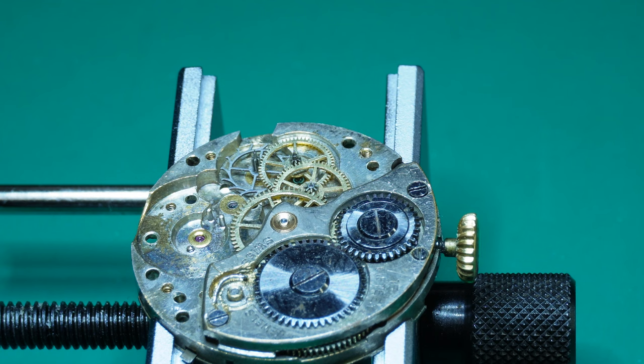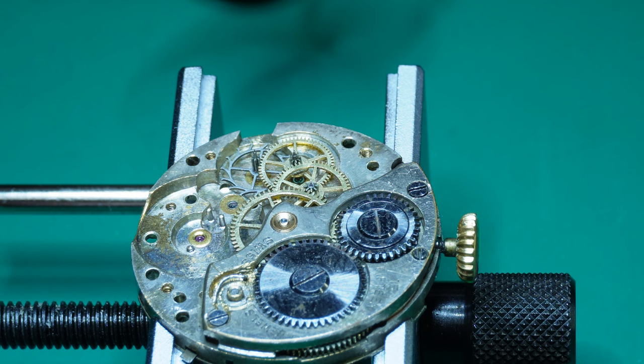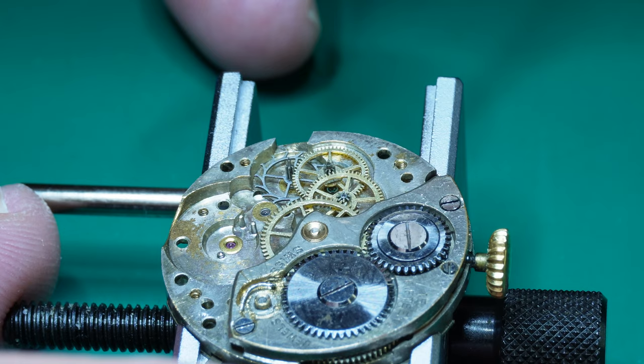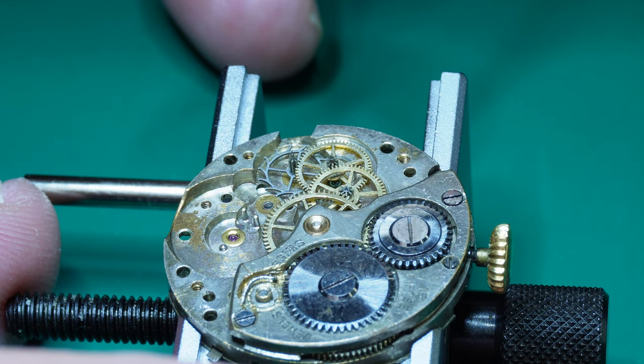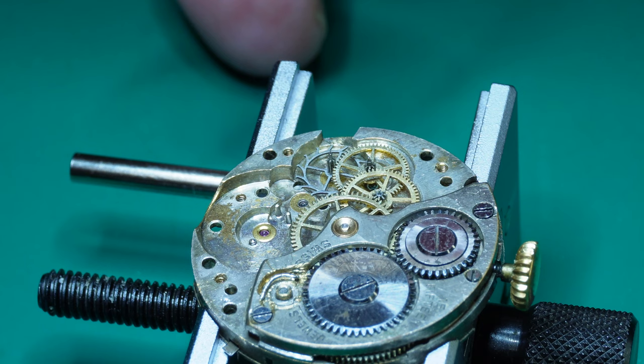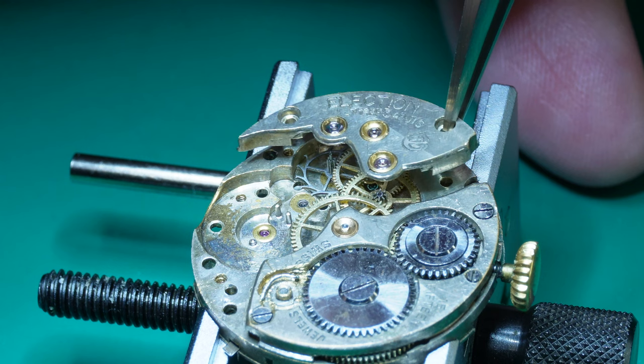Once you're confident that you're able to pick up the train wheel bridge reliably and repeatedly, the next skill that you need to develop is picking it up, which you should have by now, but then putting it down on top of the train wheel pivots. Don't worry about trying to get it through the holes of the jewels. That's a separate skill. The reason this is so frustrating is trying to do everything all at once, trying to learn everything all at once. And that's just about impossible.